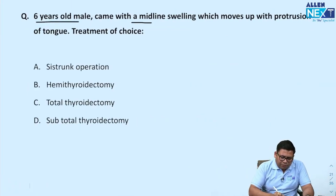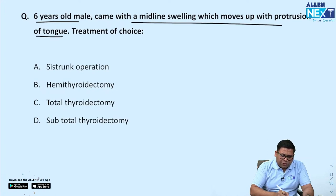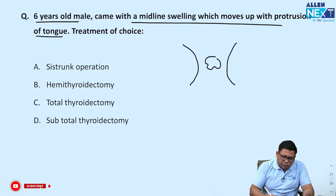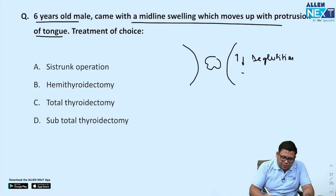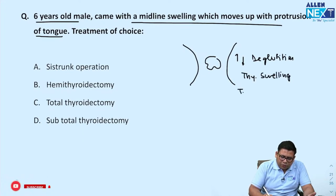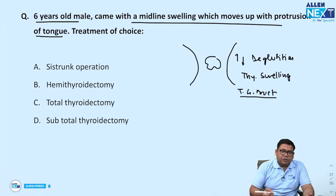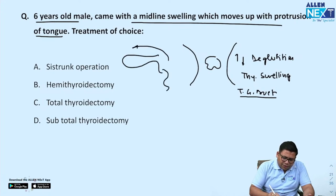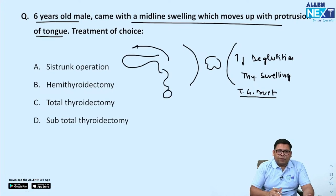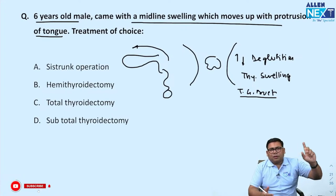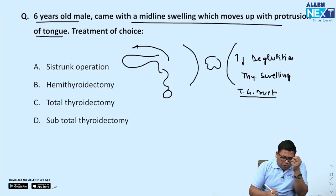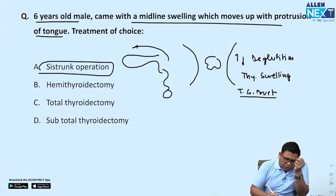A 6-year-old with midline swelling that moves with protrusion of the tongue and also with deglutition. Both thyroid swelling and thyroglossal duct cyst move with deglutition. But when it comes to protrusion of the tongue, it is the thyroglossal duct cyst — its remnants are connected via fibrous cord with the base of the tongue, because the origin of the median enlargement and thyroglossal duct is the same. The surgery is Sistrunk's operation.